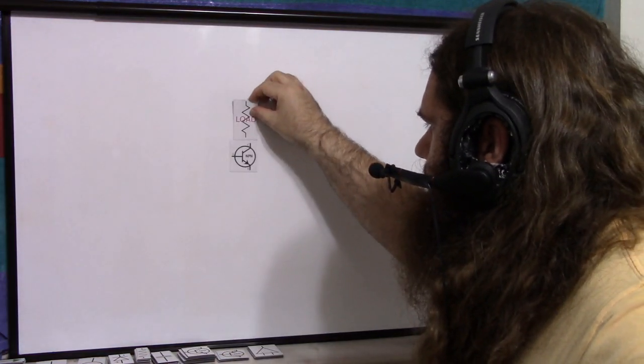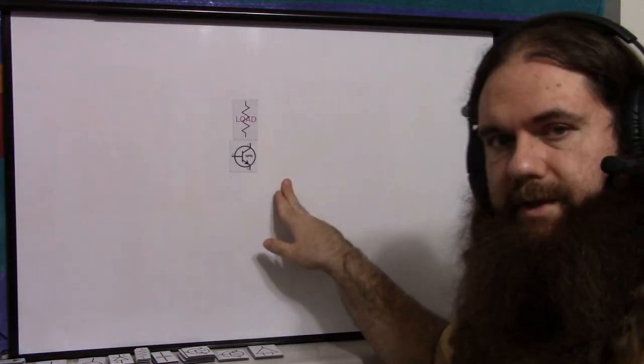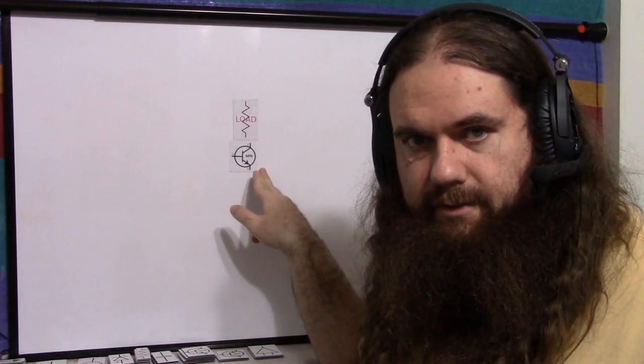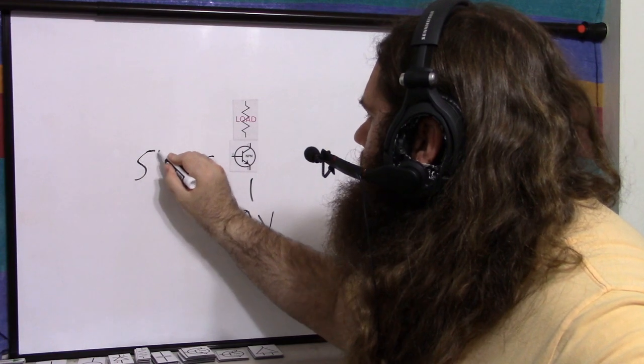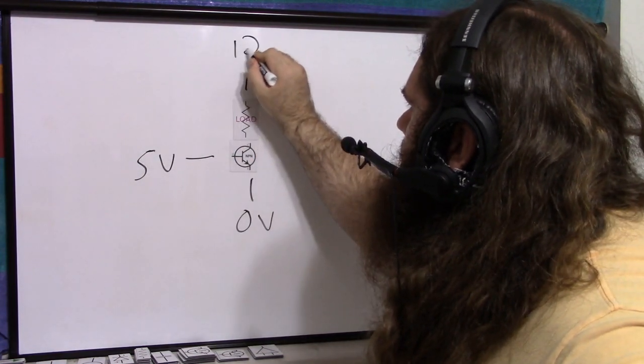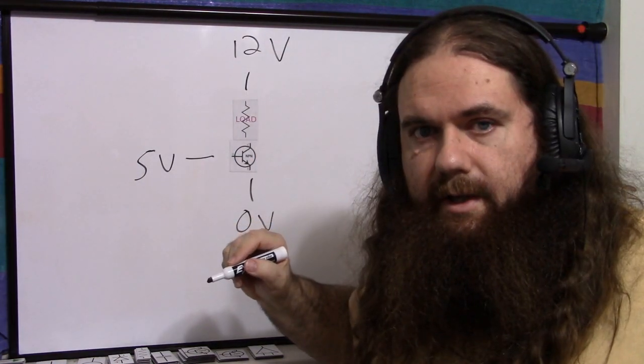If you have an NPN transistor with the load on the collector, this is a low-side switch because the transistor's down on the low-side. 0 volt on the emitter, 5 volt on the base, 12 volts on the load and the collector.